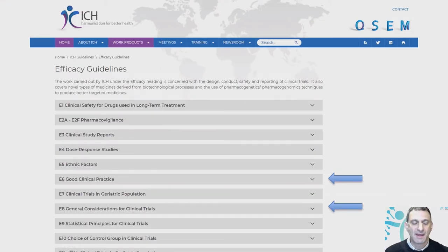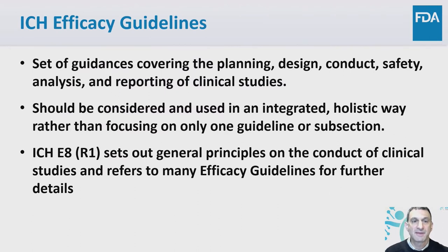This is from the ICH website. There are currently about 20 ICH efficacy guidelines, and today I'm obviously going to be talking about E8, but I will have some things to say about E6 as well. The ICH efficacy guidelines are a set of guidances covering the planning, design, conduct, safety, analysis, and reporting of clinical trials. They should be considered and used in an integrated holistic way rather than focusing on only one guideline or subsection. ICH E8 R1 sets out general principles on the conduct of clinical studies and refers to many efficacy guidelines for further details. This suffix R1 refers to the renovation, the first renovation.